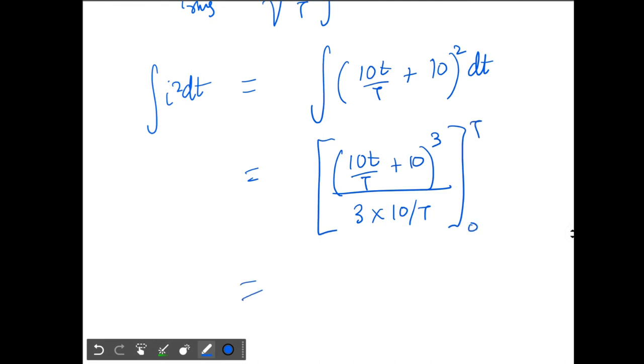This will come out to be equal to T by 30. When I put capital T here, T will get cancelled out - so 10 plus 10 is 20, so 20 cube minus when I put 0 here I get only 10 cube.